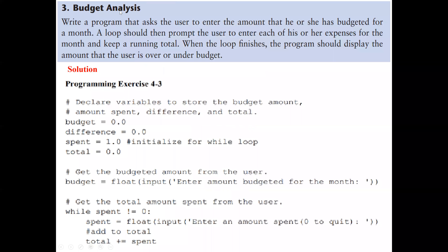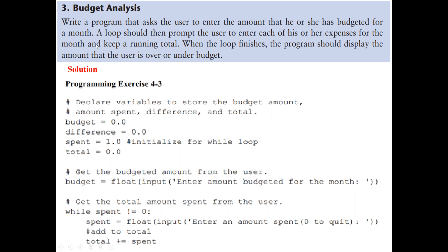Our first problem is budget analysis. We should write a program that asks the user to enter the amount that he or she has budgeted for a month. A loop should then prompt the user to enter each of their expenses for the month — the expenses can be more than one, for example rent, transportation, feeding, et cetera. We keep a running total, so anytime we enter an expense we add it to the previous total. When the loop finishes, the program should display the amount the user is over or under budget. We declare variables to store the budget amount, the amount spent, the difference, and the total expenses.